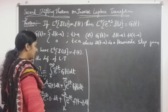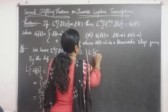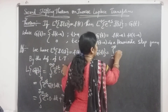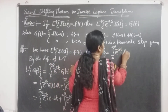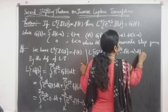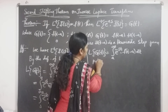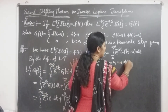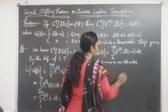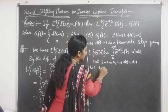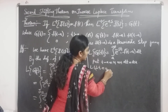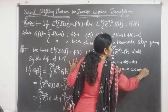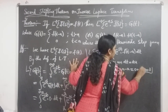The first integral value is 0, so L of g of t equals the integral from a to infinity of e to the power minus s·t times f of t minus a dt. We take the substitution t minus a equal to u, so dt equals du. When t equals a, u equals a minus a which is 0, so the lower limit of u is 0.